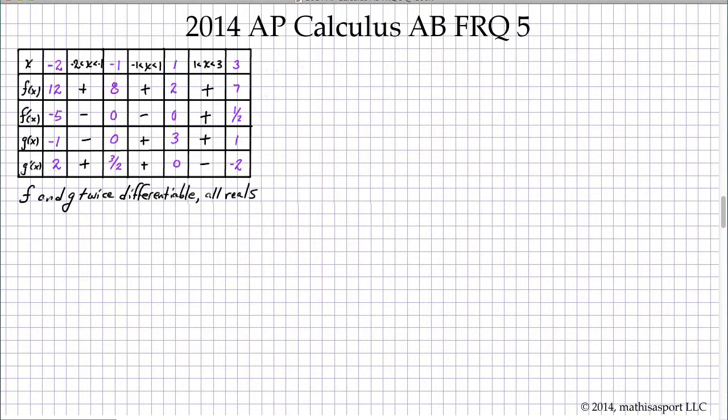So we have functions f and g. We know they're twice differentiable everywhere and we know their selected values at the points given in the table.